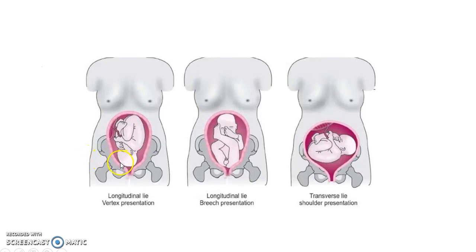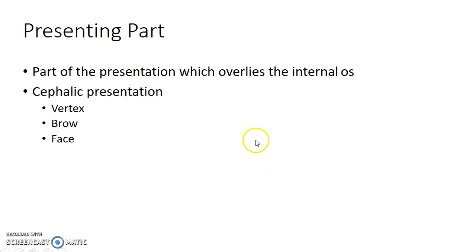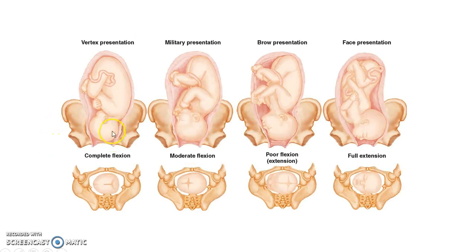In this picture you can see the head occupies the lower pole of the uterus, so it is cephalic presentation. In this case the lower limbs occupy the lower pole of the uterus, so it is breech or podalic presentation. In this case the shoulder occupies the lower pole of the uterus, so it is shoulder presentation. Now coming to presenting part: the part of the presentation which overlies the internal os is called the presenting part.